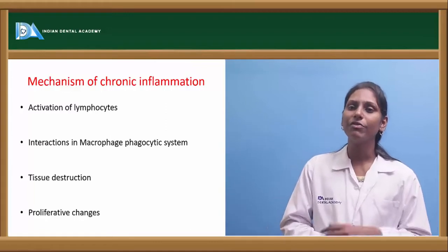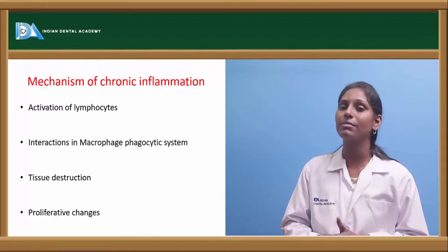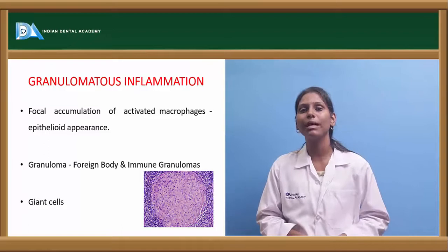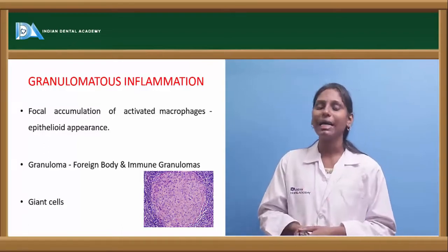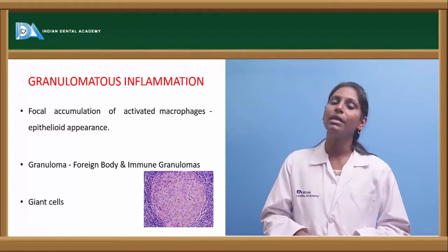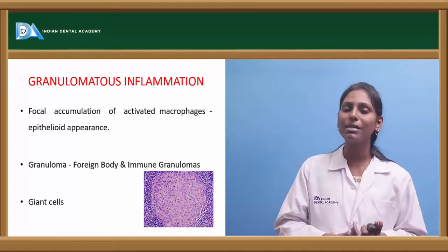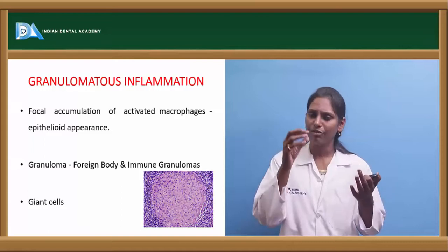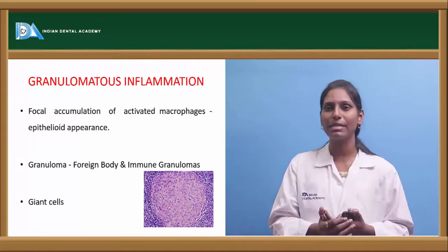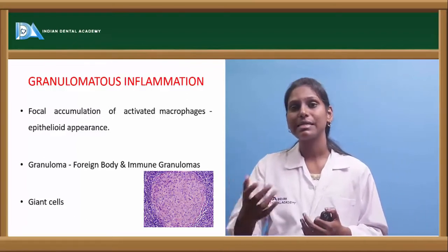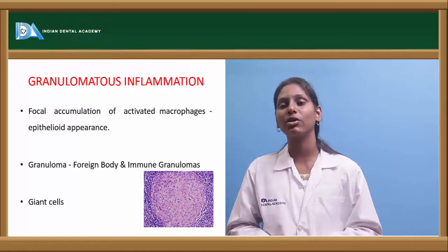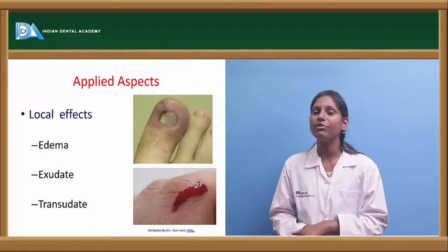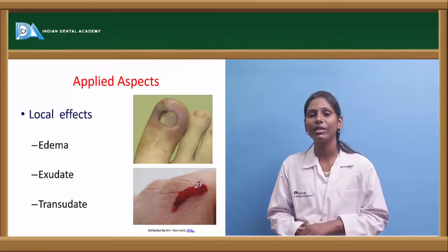The mechanism of chronic inflammation involves: activation of lymphocytes, interaction of the macrophage-phagocytic system, tissue destruction, followed by proliferative changes. Granulomatous inflammation is a focal accumulation of activated macrophages resulting in epithelioid appearance. Granulomas are of two types: foreign body granulomas (caused by retained suture material or entrapped foreign bodies) and immune granulomas, seen in diseases like sarcoidosis and tuberculosis. Giant cells are a characteristic cellular feature of granulomatous inflammation.